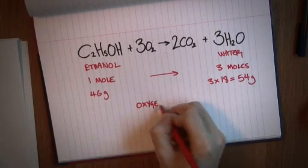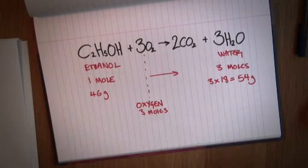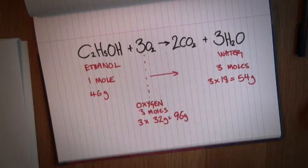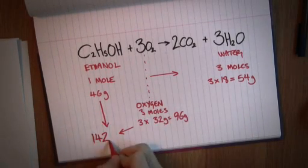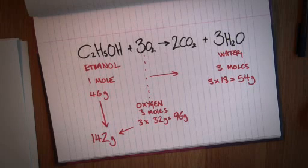Okay, and you used up 3 moles of oxygen to do that. That means you reacted 3 times 32 equals 96 grams of oxygen, 46 grams of ethanol. That's 142 grams of starting material in total.